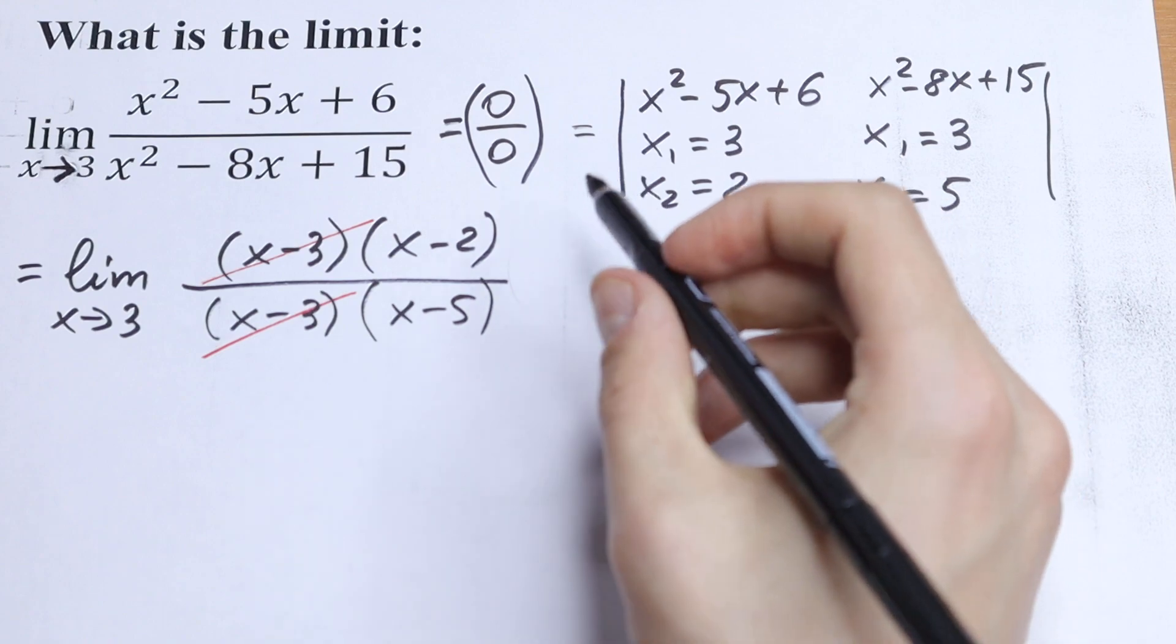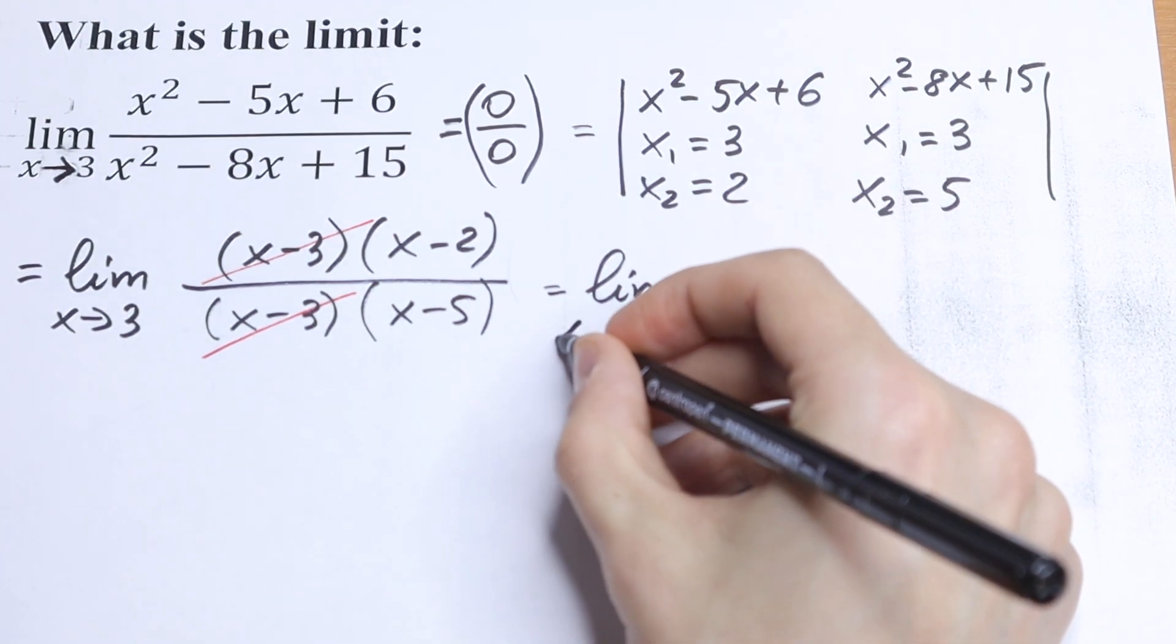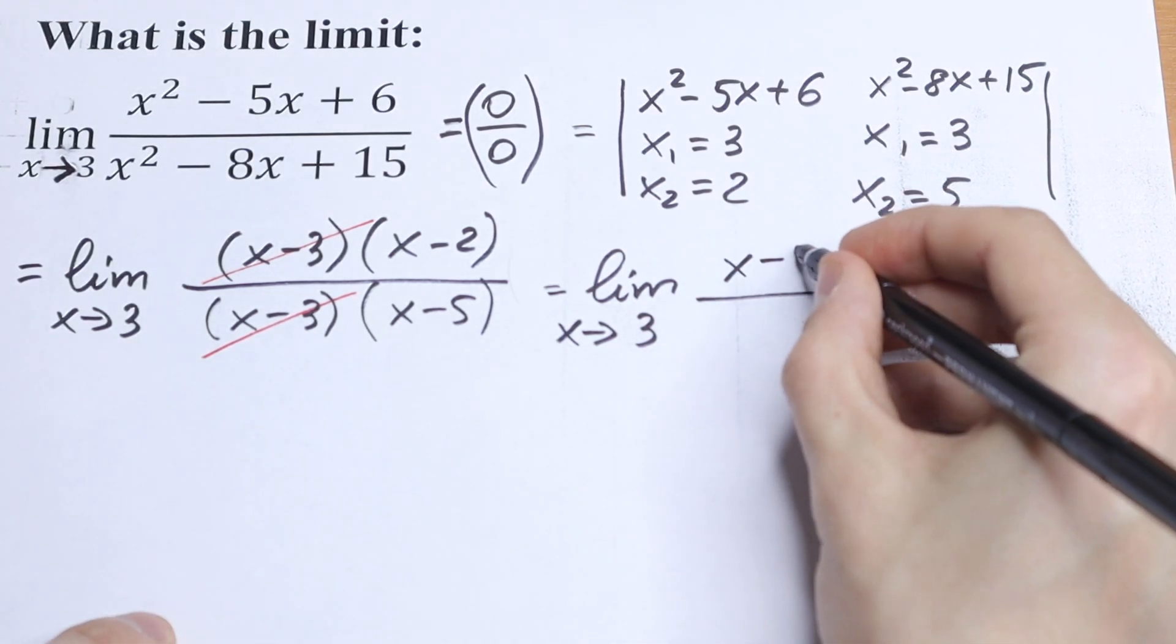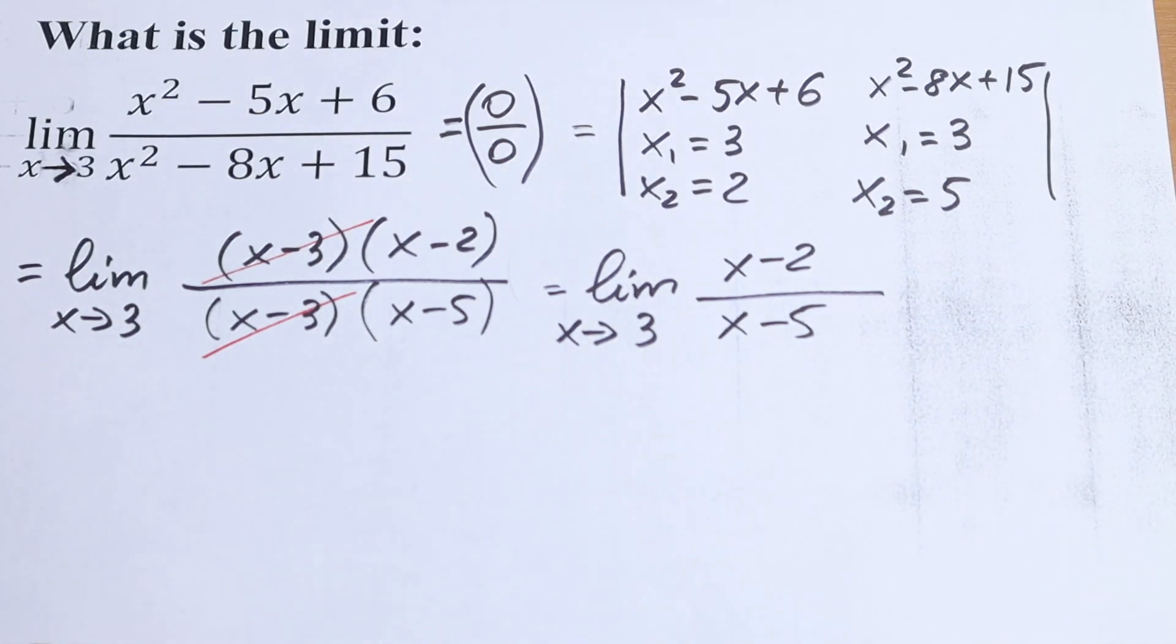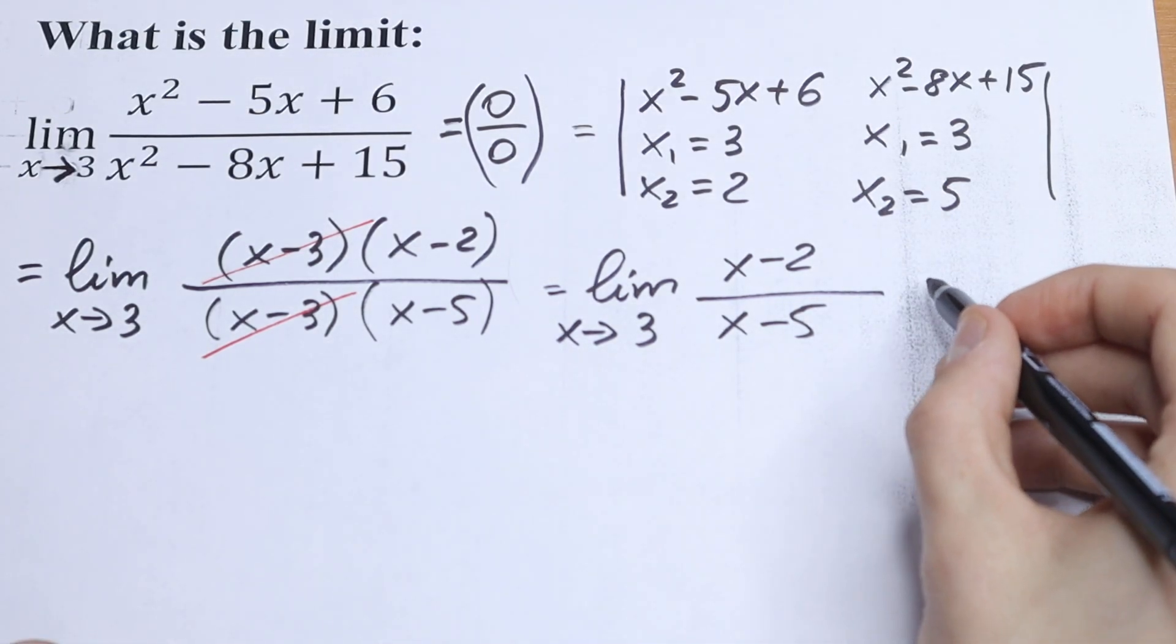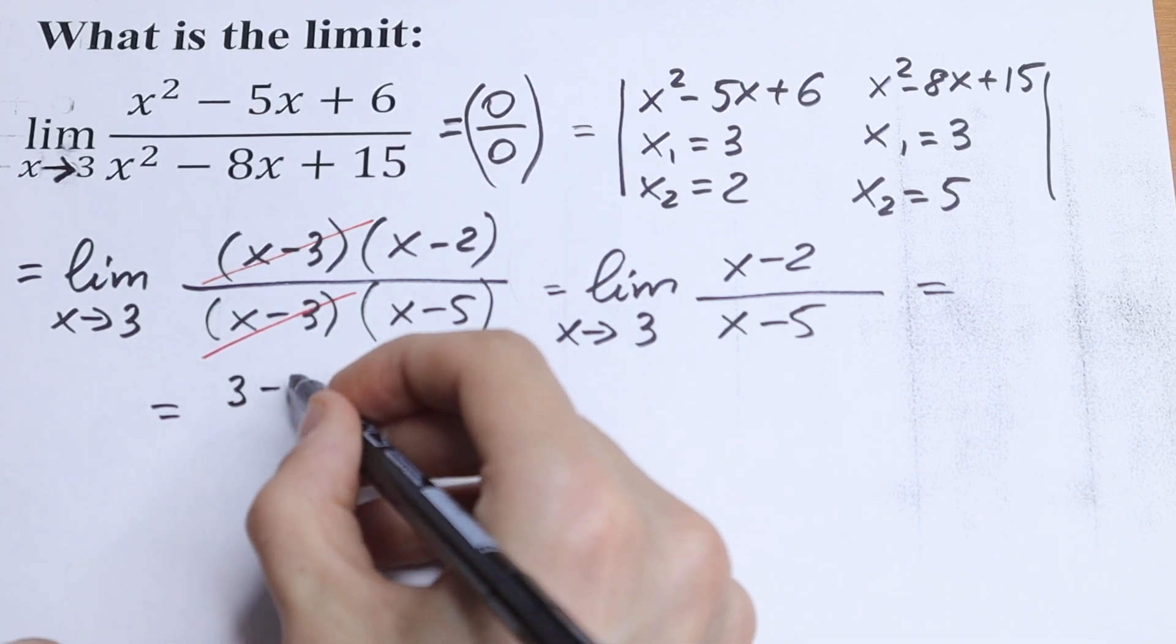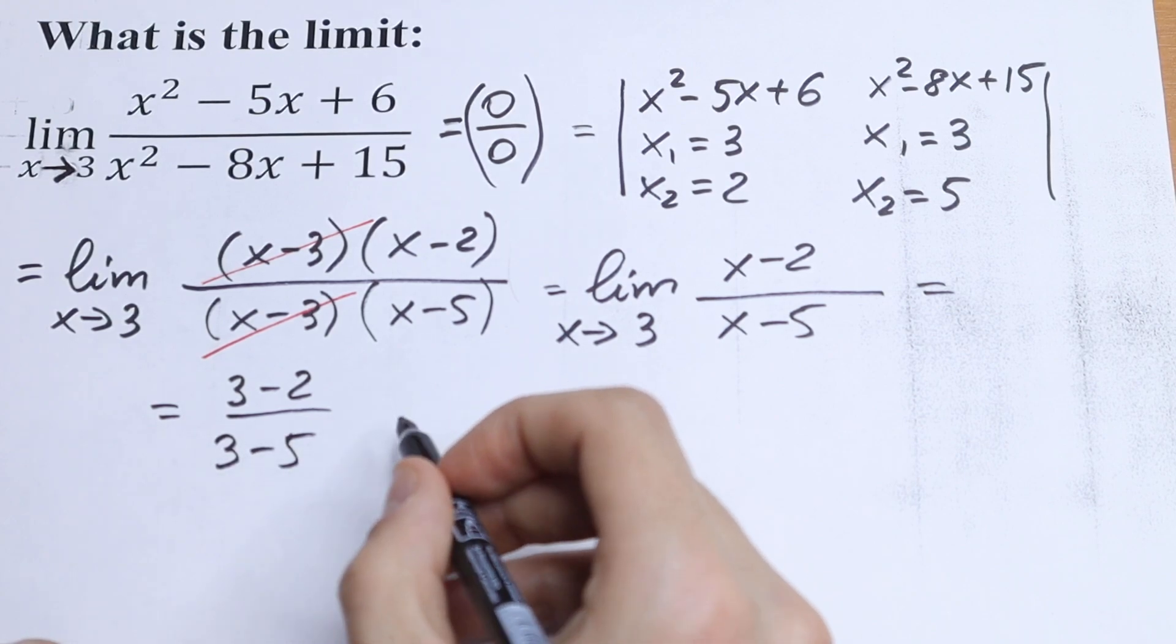And as a result, we will have an interesting and really good case. We will have that our limit x approaches 3 of the function x minus 2 over x minus 5. And it's a really good case to use direct substitution right here. So we will have 3 minus 2, and in denominator we will have 3 minus 5.